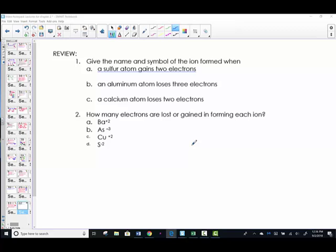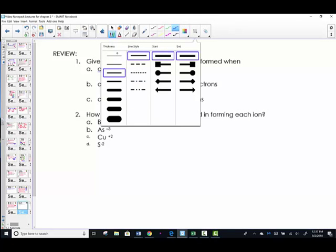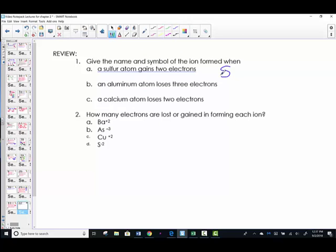The review. Let's give the name and the symbol of the ion formed when sulfur atom gains two electrons. Okay, so find the element sulfur. Period 3, group 6A. Its elemental symbol is S. It gains two electrons, meaning, remember, electrons are negative. Two extra negative charges means it's S negative 2. Instead of sulfur, we change the ending to sulfide ion.